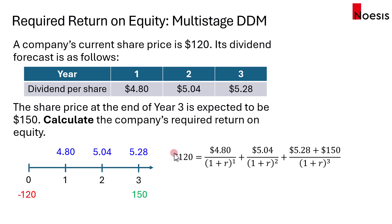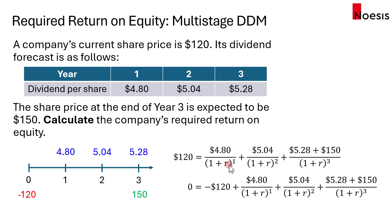By definition, the present value of the dividends and the terminal price in year 3 should be equal to the share price today, and R would be the required return on equity. If you move $120 to the right-hand side, it comes out as a negative number, because that would be like a cash outflow. So we need to find this R, which is our required return on equity.